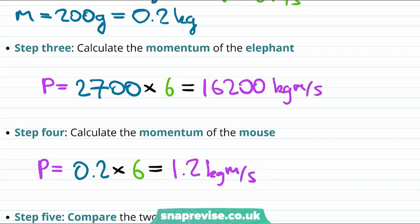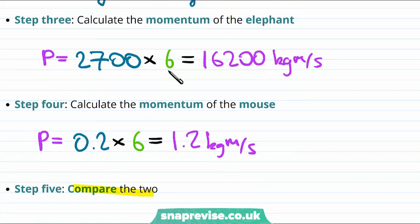Now, comparing these two momenta, we see that even though both the elephant and the mouse move at the same speed, the momentum of the elephant is much larger than the momentum of the mouse, because the mass of the elephant is much larger than the mass of the mouse.